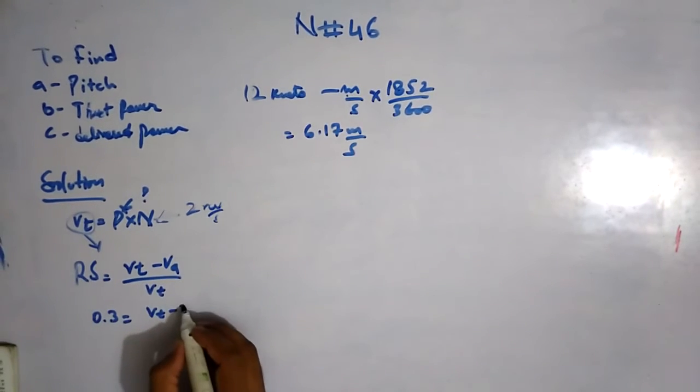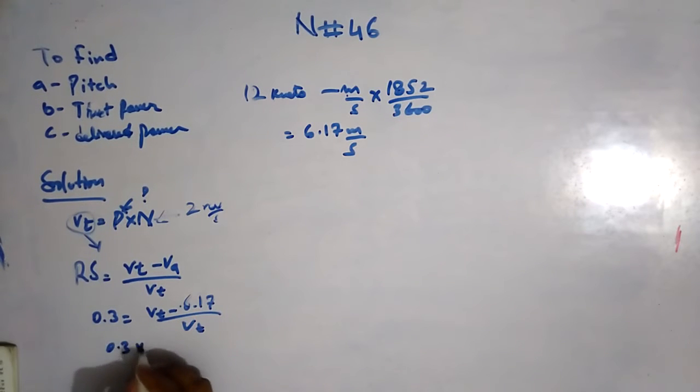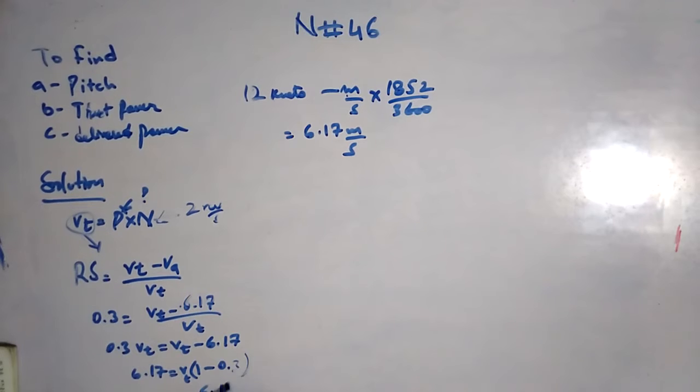So 0.3 equals (VT - 6.17) / VT. Rearranging: 0.3 VT = VT - 6.17, giving 6.17 = (1 - 0.3) VT. Now VT equals 6.17 / (1 - 0.3) = 6.17 / 0.7.